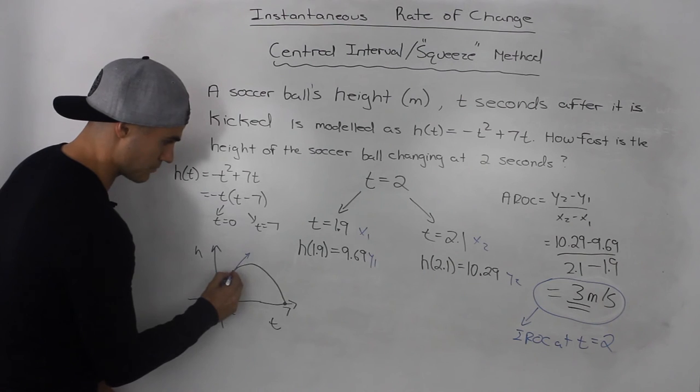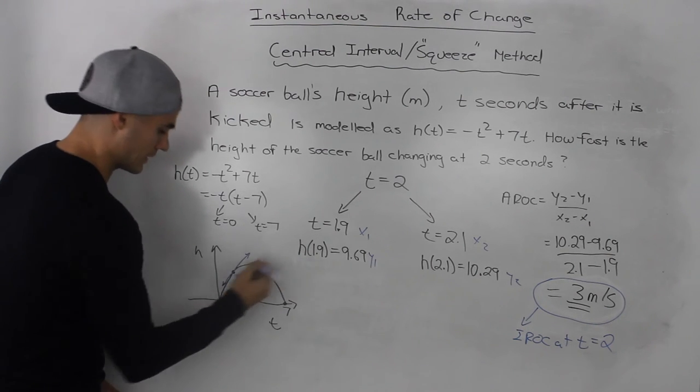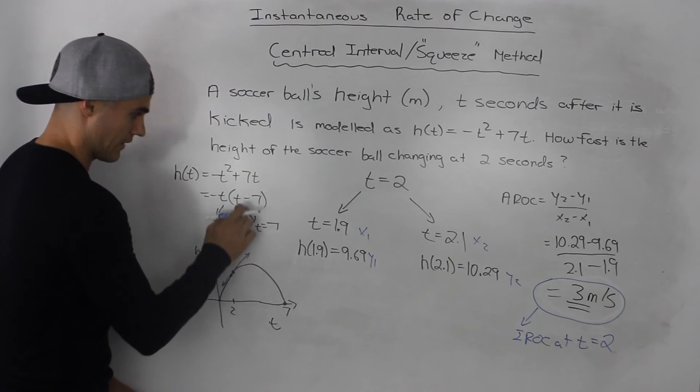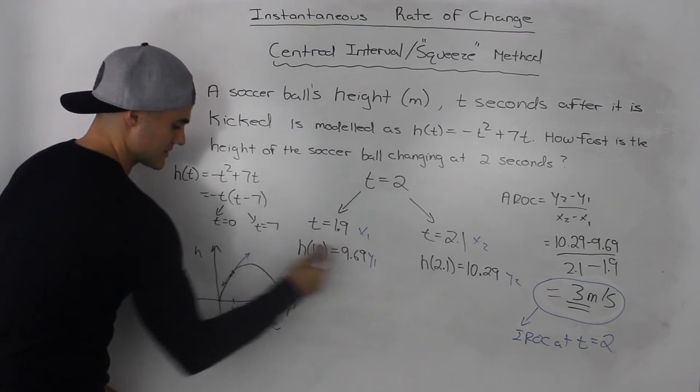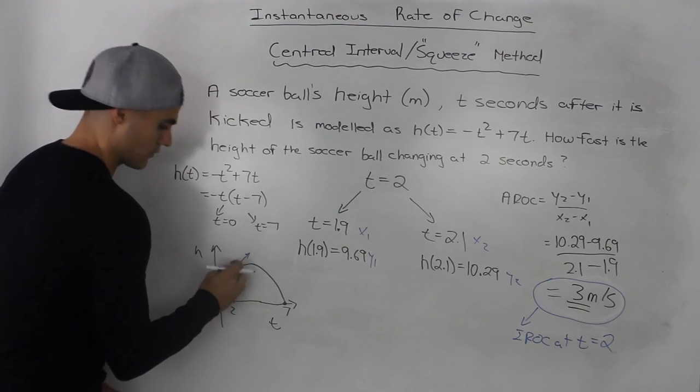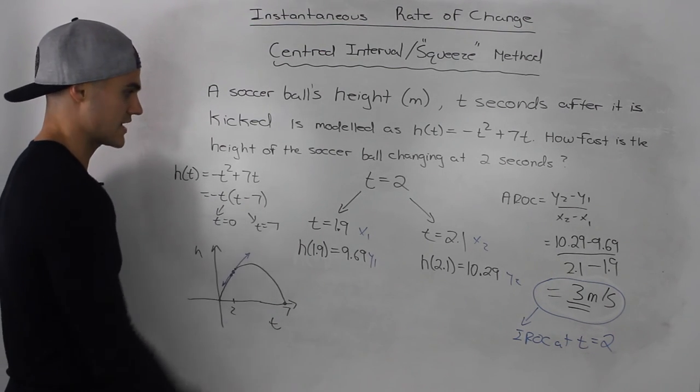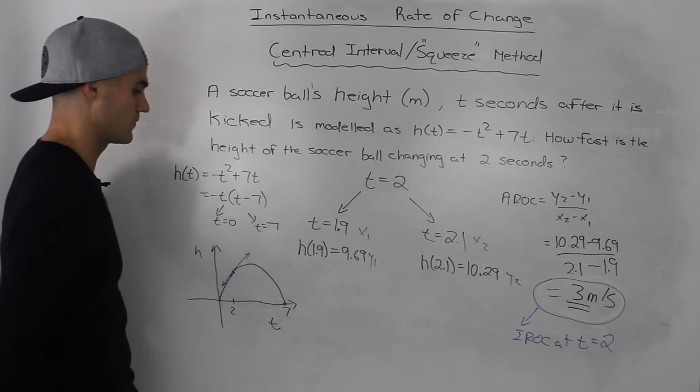So what we did was we picked a point, 1.9 and 9.69, which was very close to 2, and then 2.1 and 10.29, which was over here, and we found the slope between those points, and that gave us a good approximation of the slope of the tangent at t = 2.